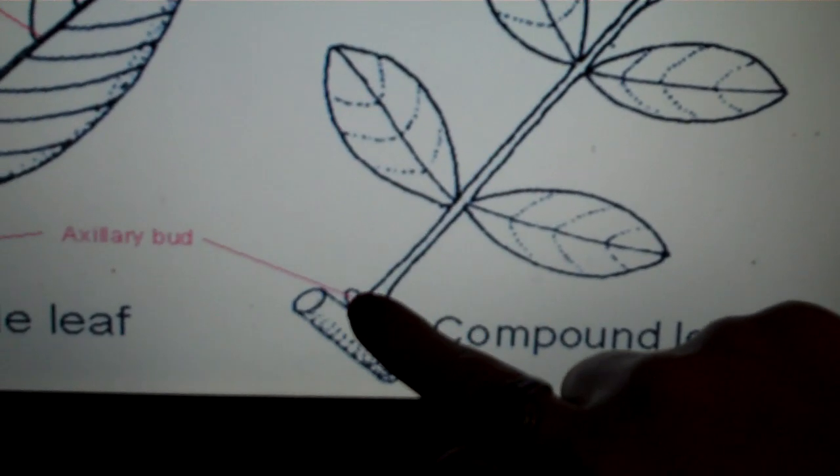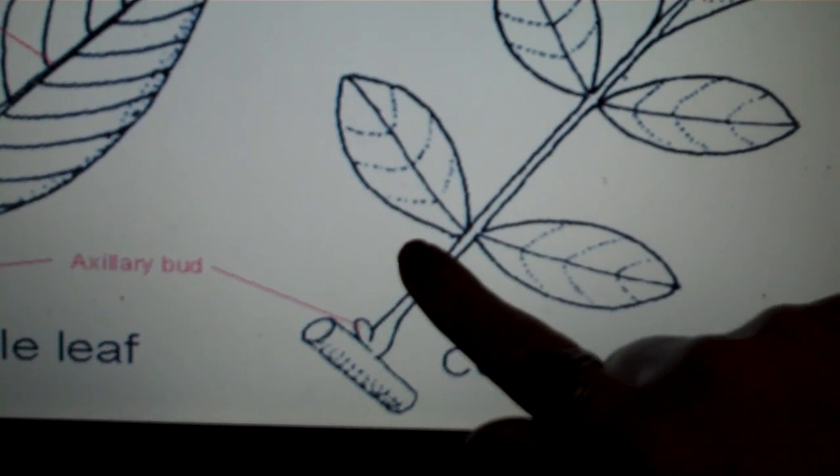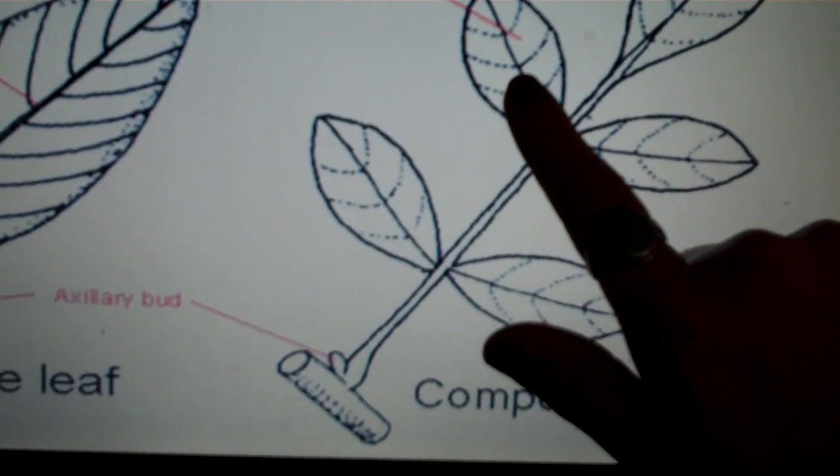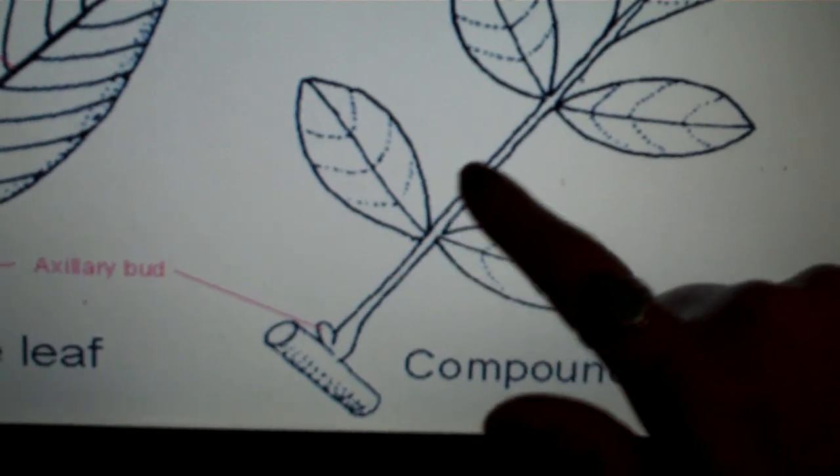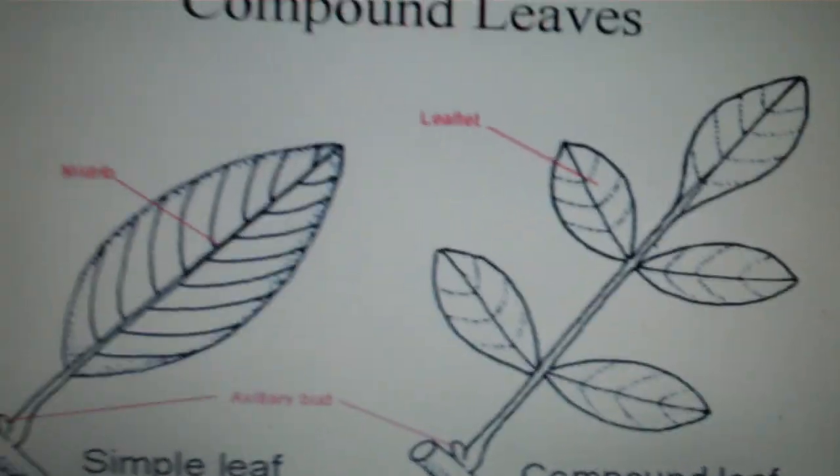And then we have our petiole with our axillary bud. You'll notice that these are not individual leaves or blades because they do not have axillary buds. This is called a compound leaf.